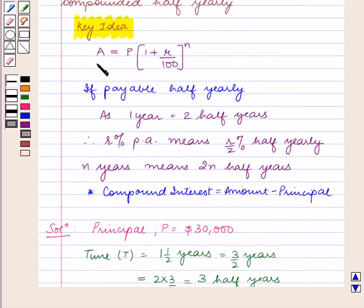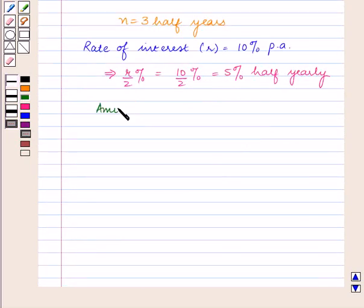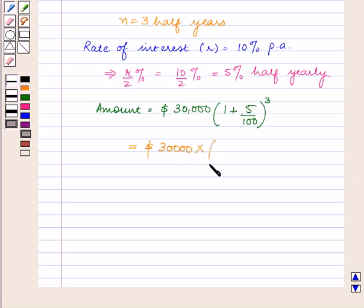As we know, amount A = P × (1 + R/100)^N. So, the amount = $30,000 × (1 + 5/100)^3 = $30,000 × (100 + 5)/100)^3.